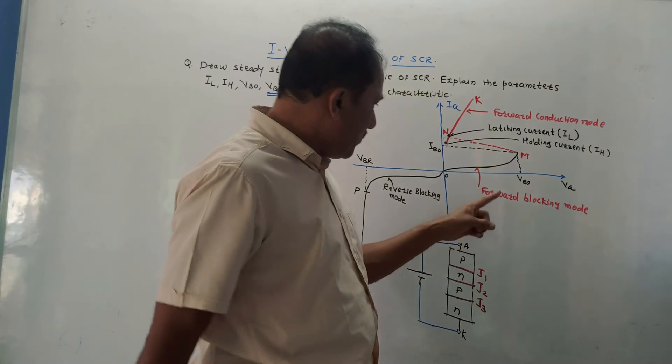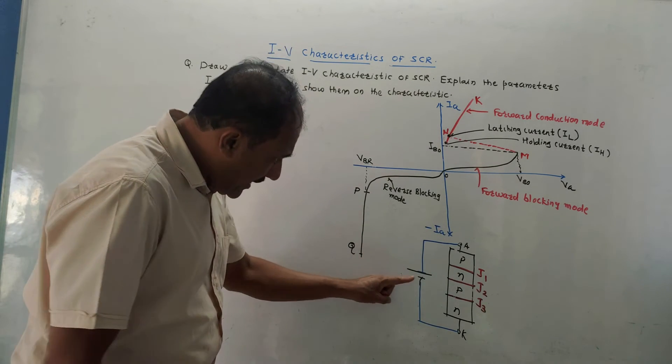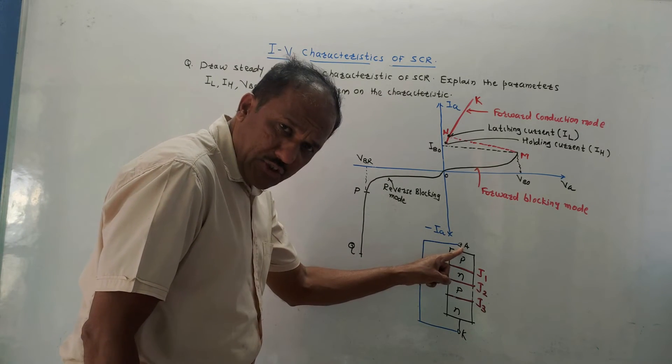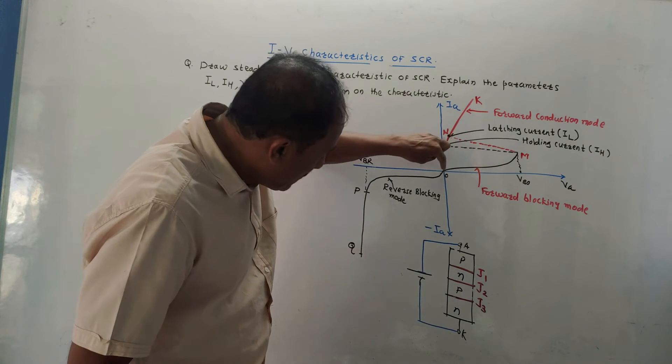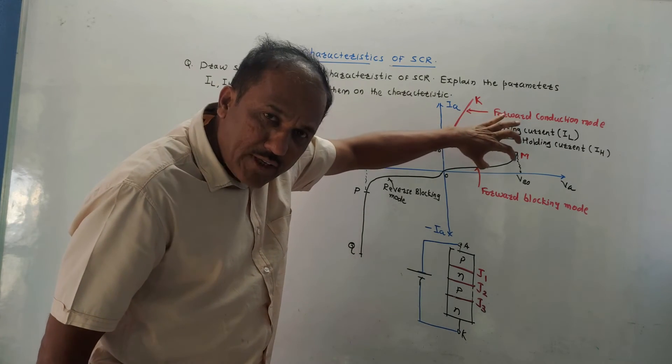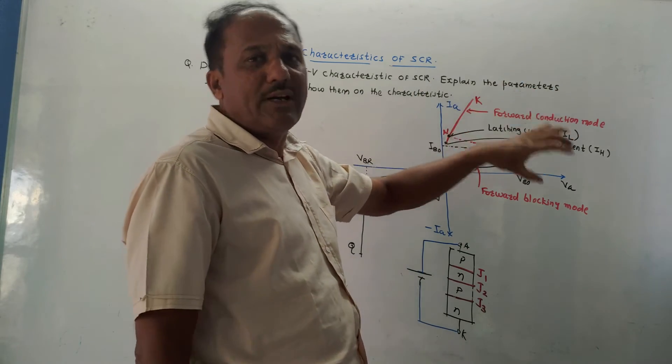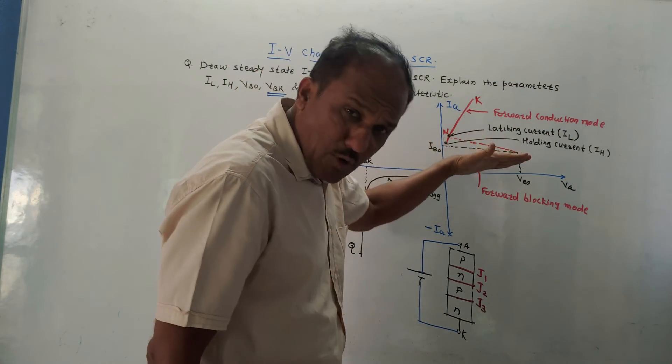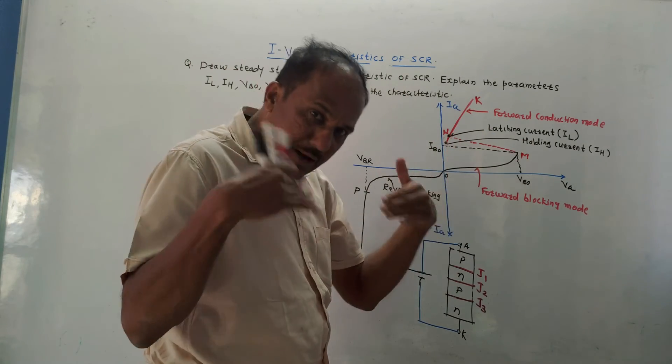The second reason is forward blocking mode. Consider the reverse case. If I will apply positive connection to the anode terminal and negative to the cathode terminal, then initially from 0 to, say, point M, from 0 to M, very small amount of forward current flows. It is known as the leakage current, rather forward leakage current. This is very small current. So the structure, SCR, offers maximum impedance.